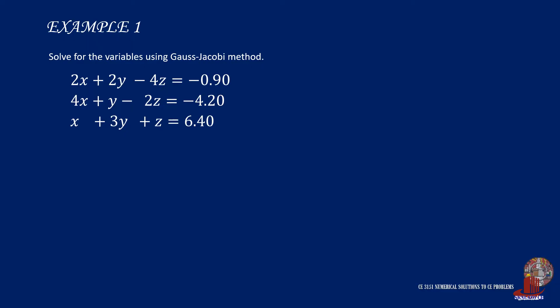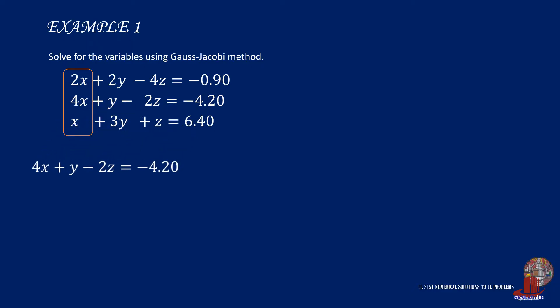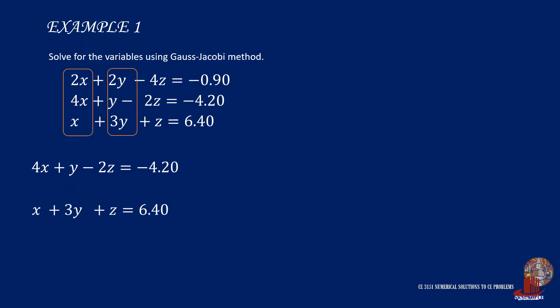We check for iterations by main diagonal dominance, starting with the variable x, from which the second equation with 4x is taken because 4x is the highest coefficient in the group. Next, from the y variables, we have 2y, y, and 3y, so we take the equation with 3y as the second equation.